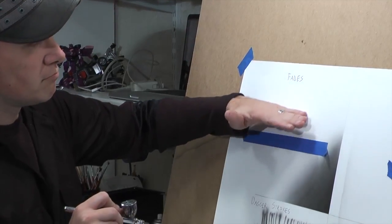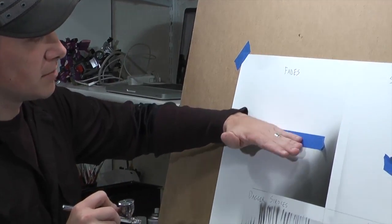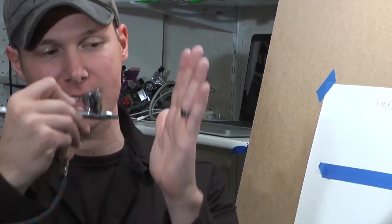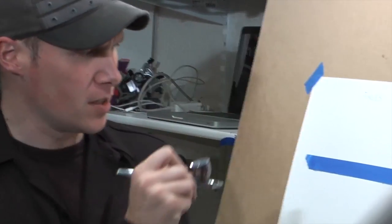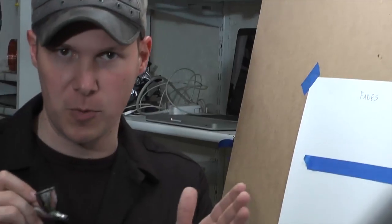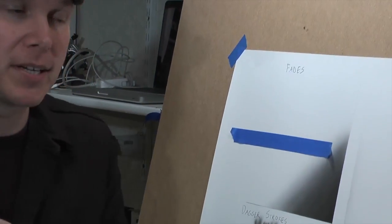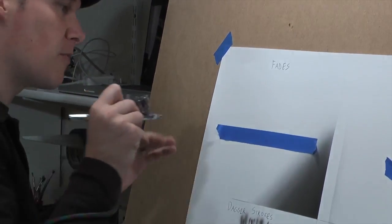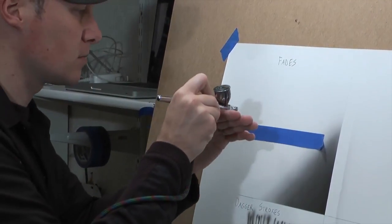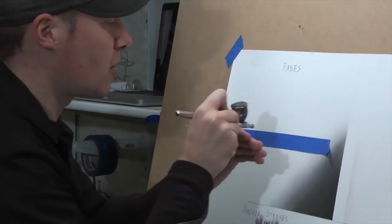The idea here is basically line control, and we're going to work up to a certain area. For this method, what you want to do is keep a consistent distance from the paper. Obviously figure out somewhere, practice where you want to be, whenever you're comfortable with that, go ahead and start spraying.